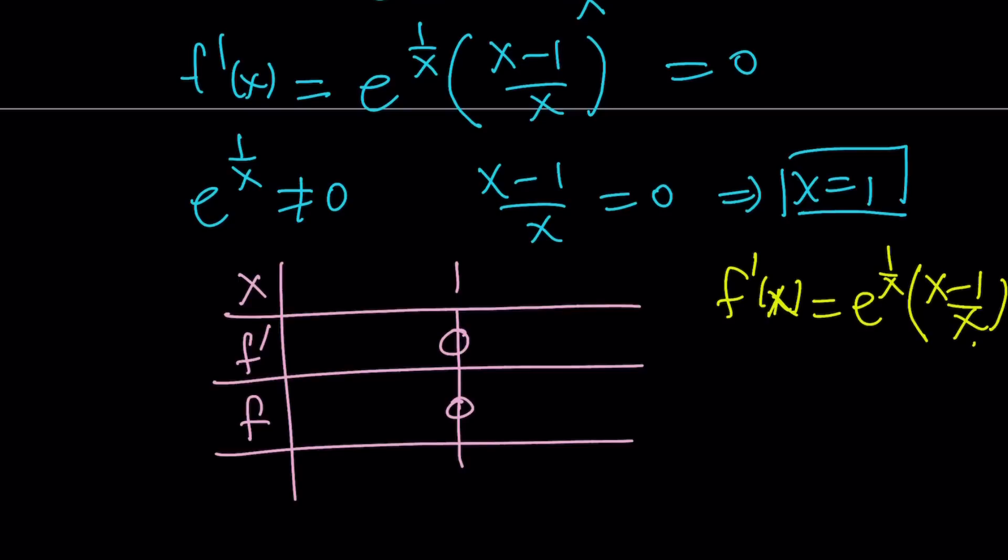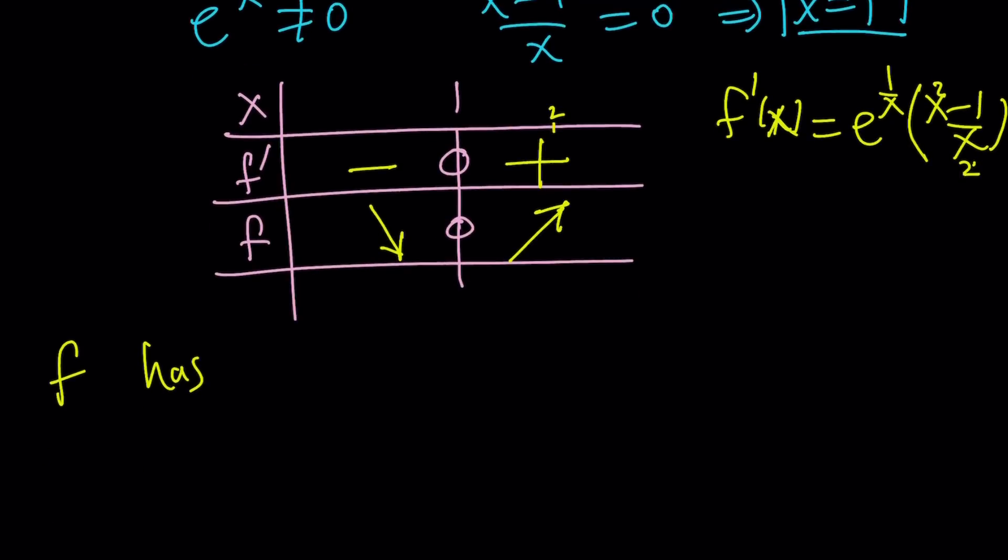If x is two, you're going to get a positive quotient. e to the power of one over x is always positive. Therefore, our function, the derivative of our function is positive if x is greater than one. Otherwise, it's negative. This is significant because if the first derivative is negative on an interval, it means the function is decreasing. Otherwise, it is increasing. This tells us that f has a minimum at x equals one.